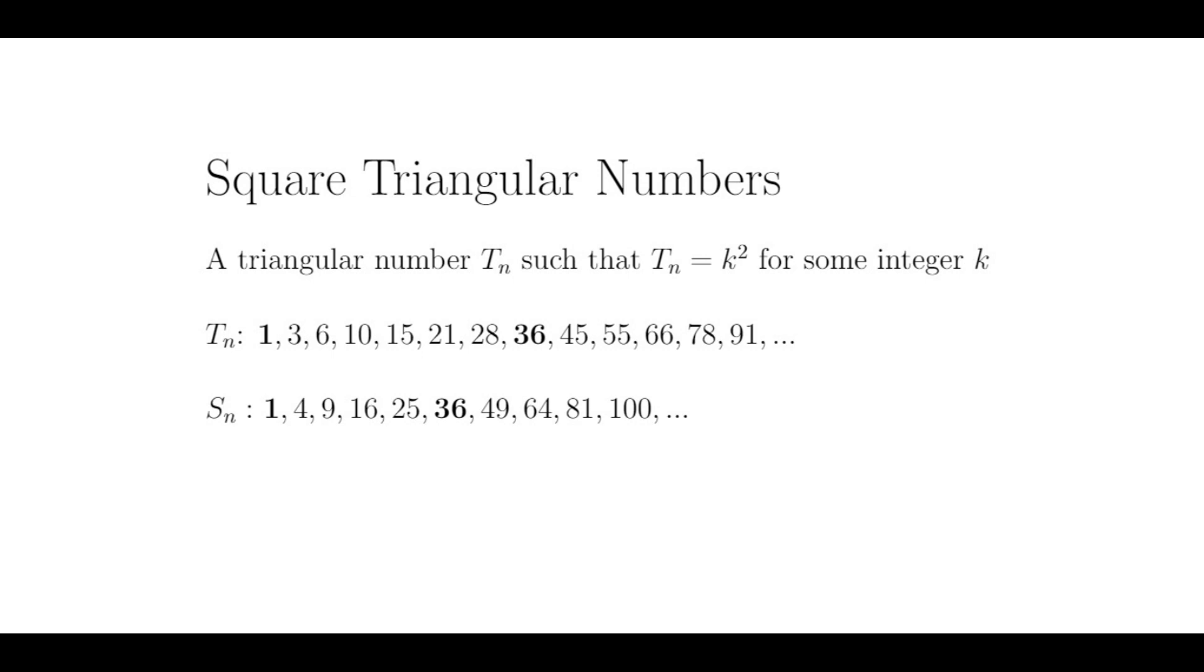So now that we have seen a relationship between the square and triangular numbers, it's natural to ask, are there any numbers that are both square and triangular? Well, of course, aside from the number 1, which is both triangular and square. Here is a list of small triangular and square numbers, with numbers appearing on both lists in bold.